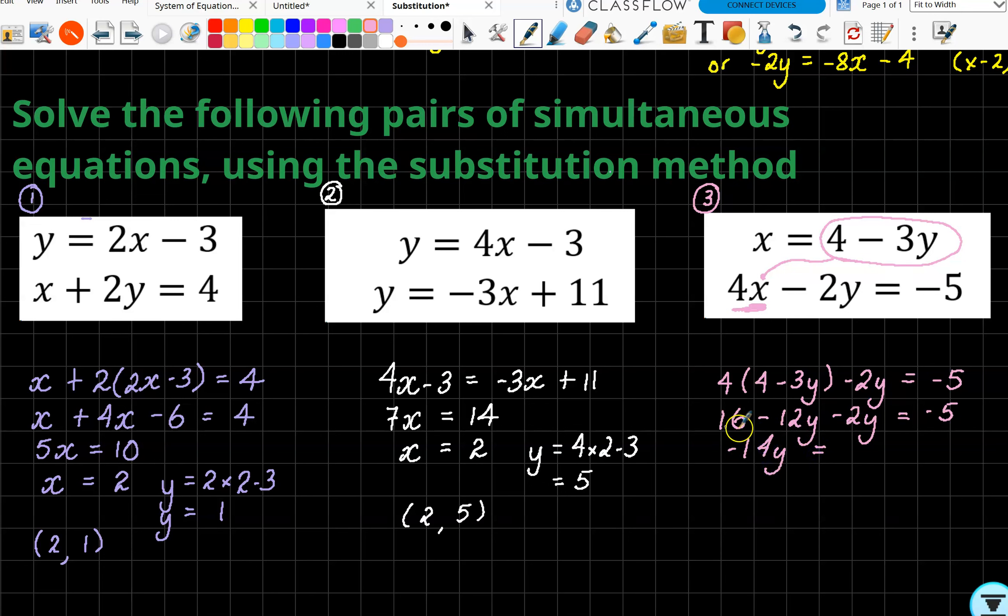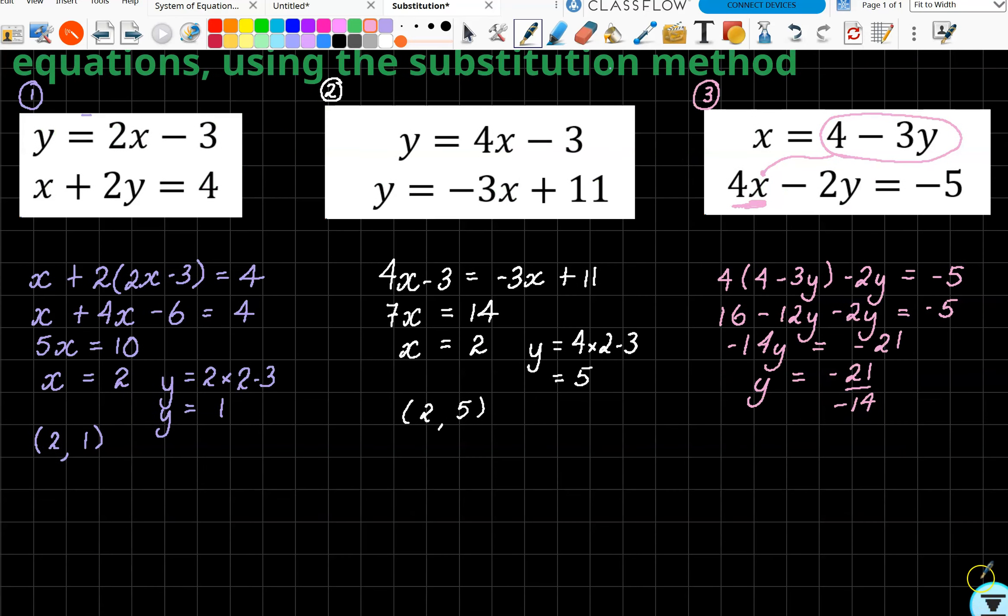So -12y - 2y is -14y. -5 - 16 is -21. To get rid of the times -14, I'm going to divide by -14. Two negatives make a positive, so now we end up with—we're not going to leave it as 21 over 14 because I can clearly see that 7 goes into both of those. So 7 goes into 21 three times and goes into 14 twice: y = 3/2.